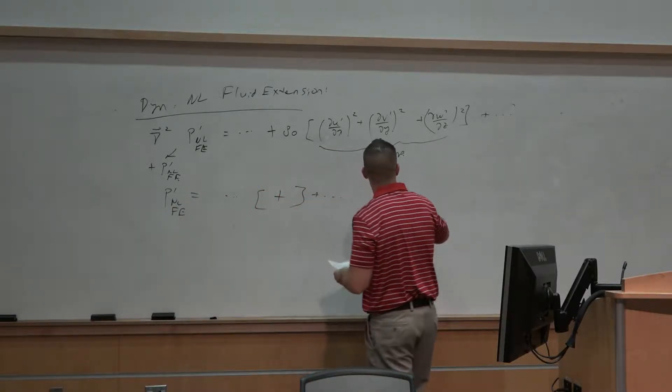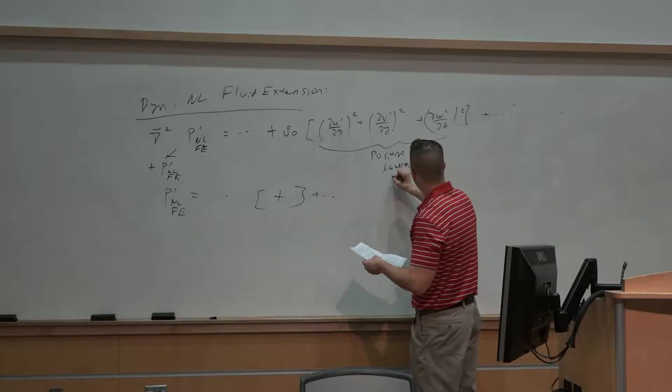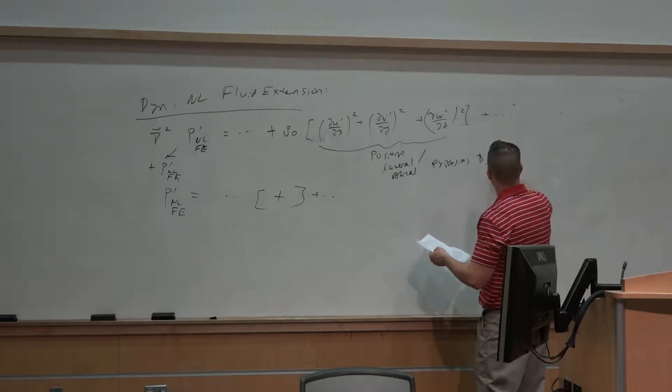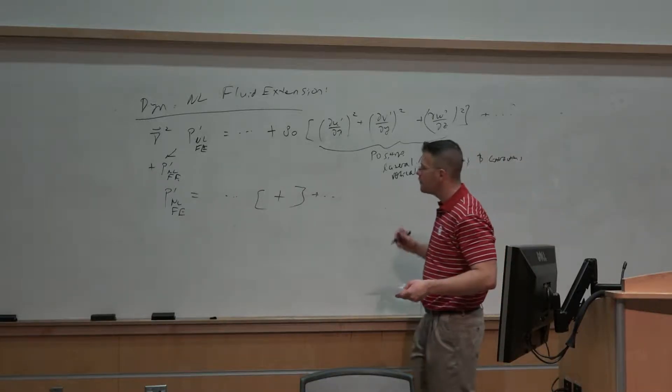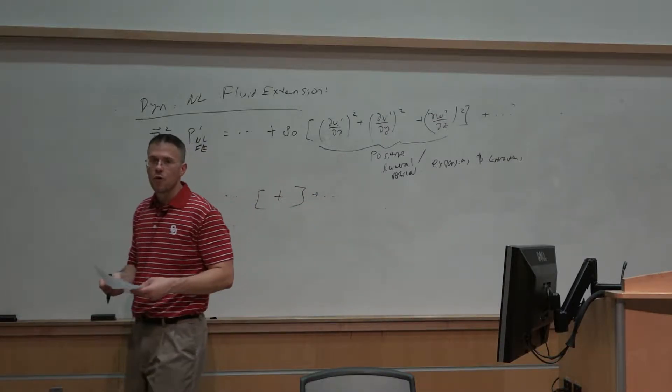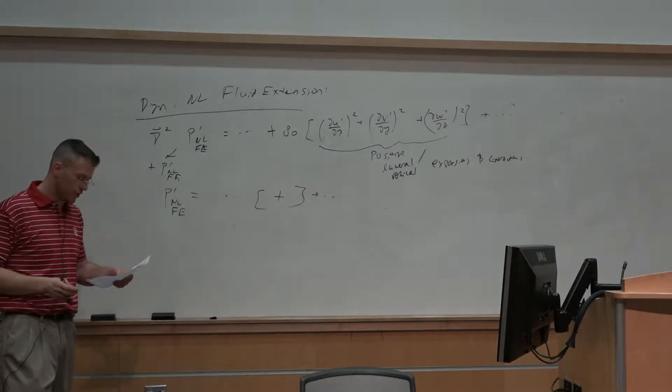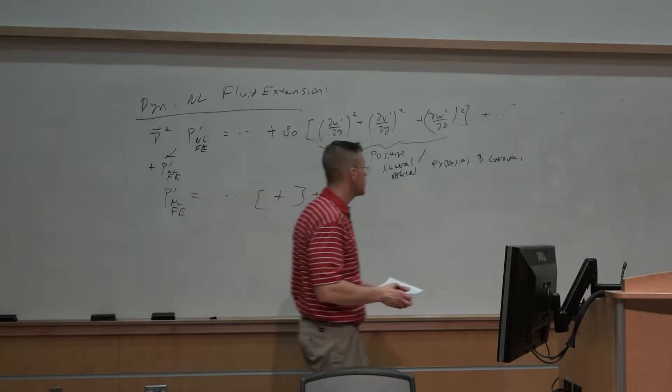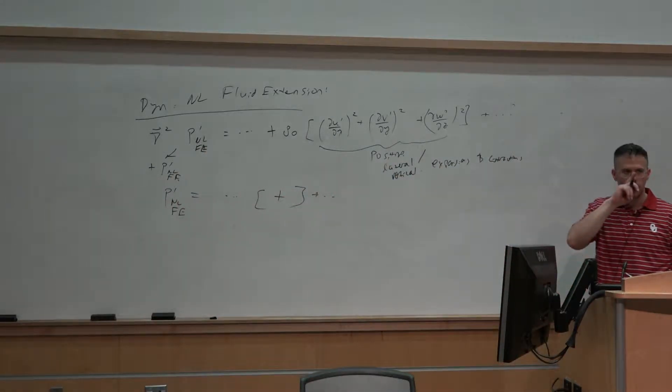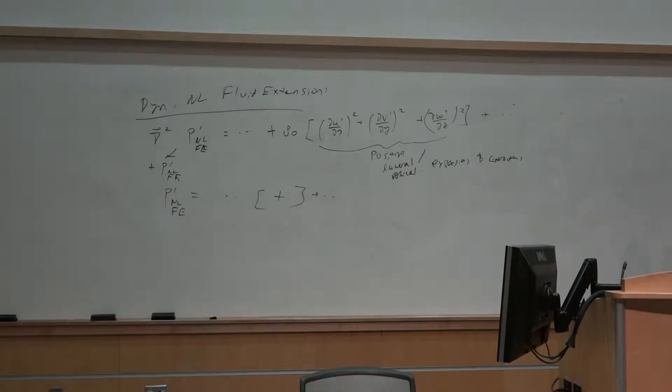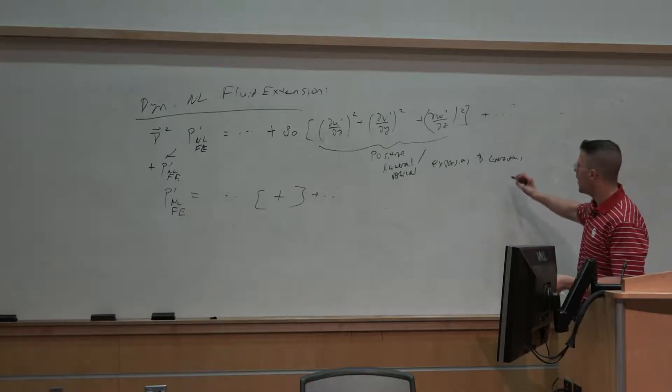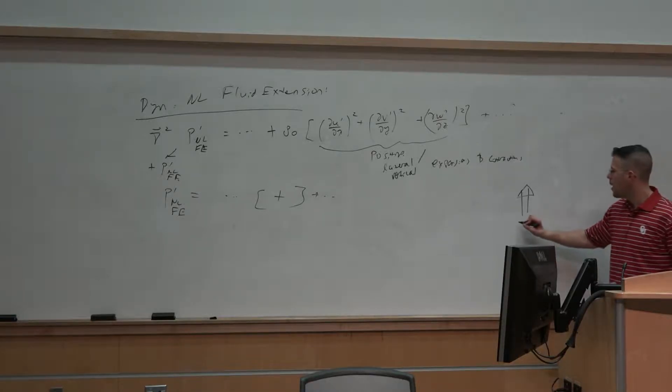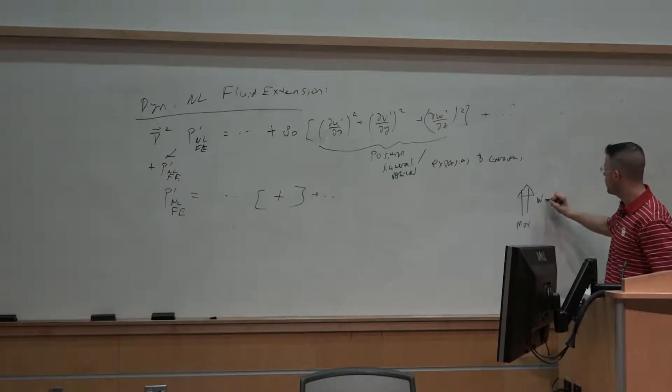So over here on the right hand side, we're dealing with lateral and vertical expansions and contractions. And wherever we have these expansions and contractions taking place, that's going to be associated with a positive perturbation pressure associated with nonlinear fluid extension. Alright, so for instance, say we have an updraft, any updraft, whether it's that initial updraft or it's associated with the flanking updrafts that develop. We're going to have an updraft over here. Beneath that updraft, we will have maximum w prime max.